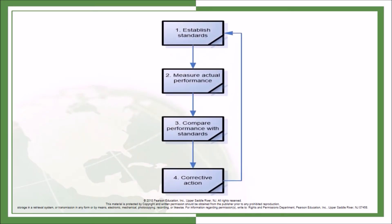Following is the flowchart for a closed loop control system. It starts with establishing standards, then measure actual performance, compare performance with standards, and corrective actions — which are considered as feedback for establishing standards. This is like a continuous process for improvement.